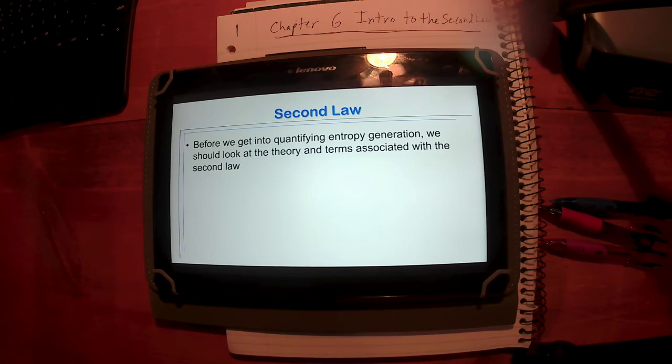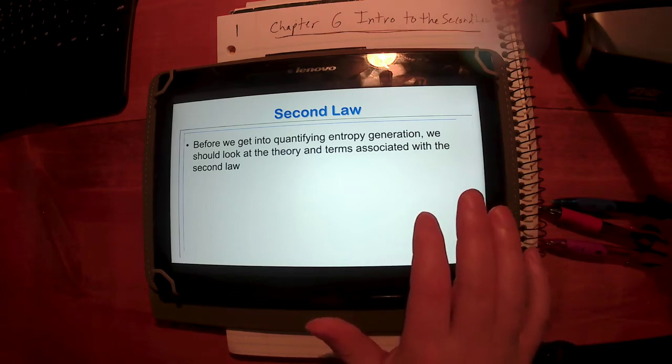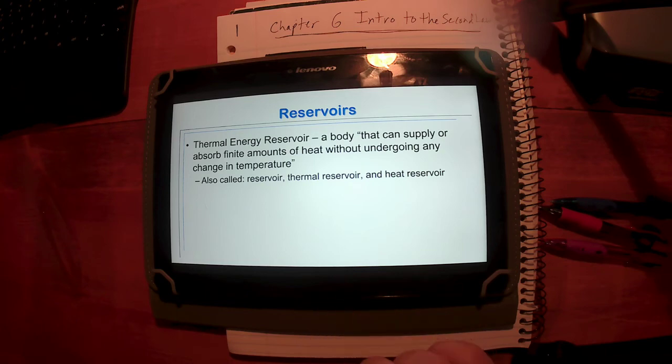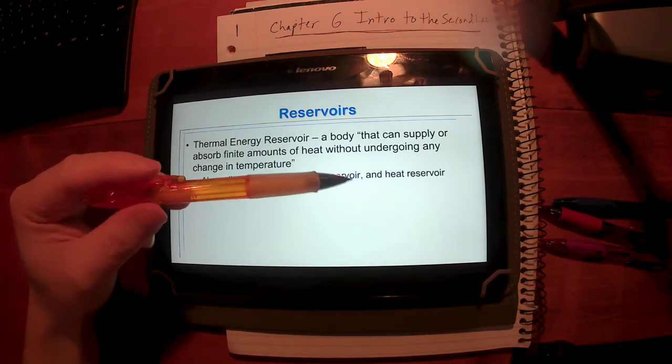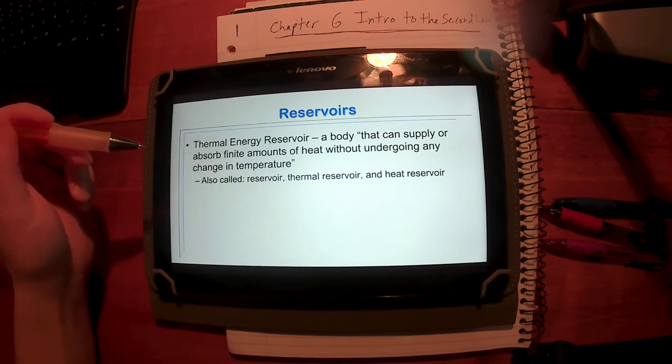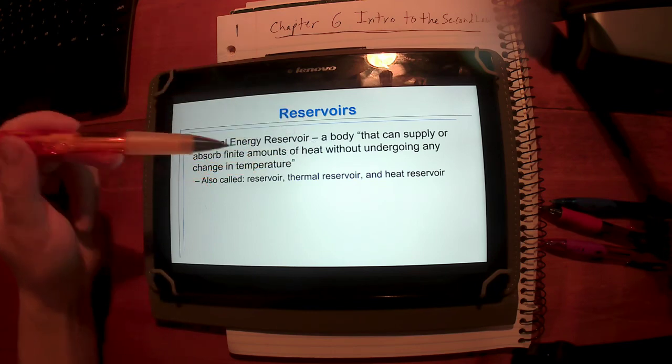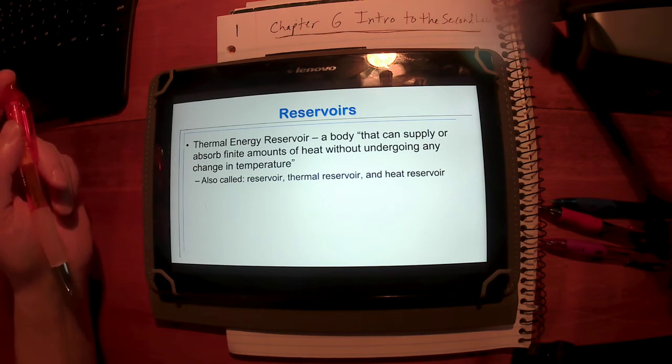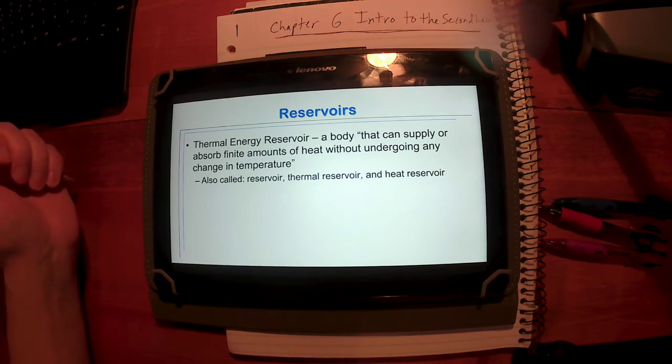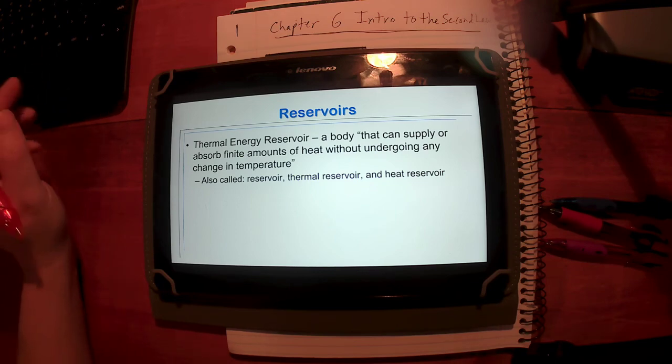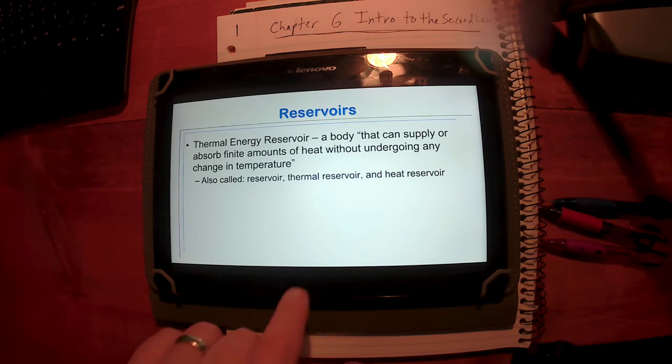Before we get into trying to quantify entropy and the amount of entropy being generated for a process, let's look at how we got there. Let's look at some theory and some terms. A term here: the term thermal energy reservoir, also sometimes called reservoir or thermal reservoir or heat reservoir. I normally just refer to it as a reservoir. A thermal energy reservoir, again direct quote from Cengel and Boles, is a body that can supply or absorb finite amounts of heat without undergoing any change in temperature, at least no significant change in temperature.